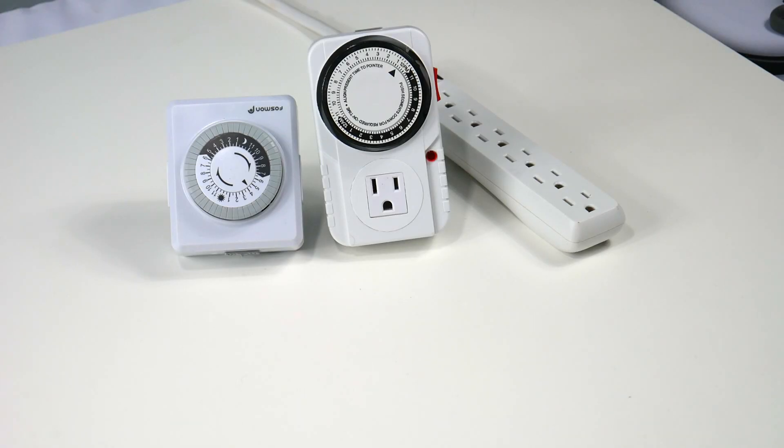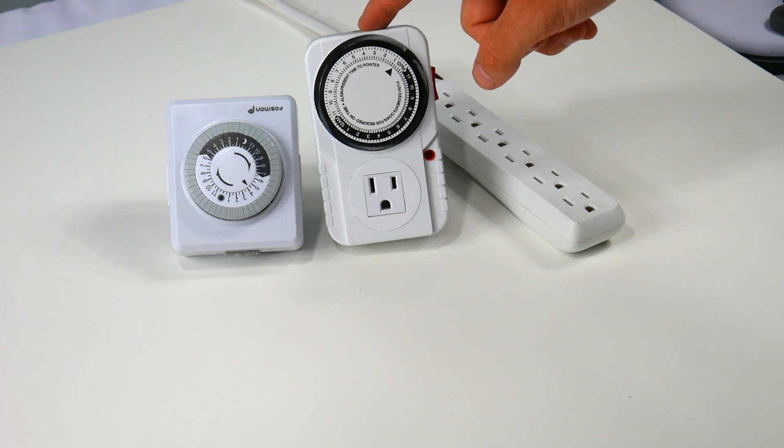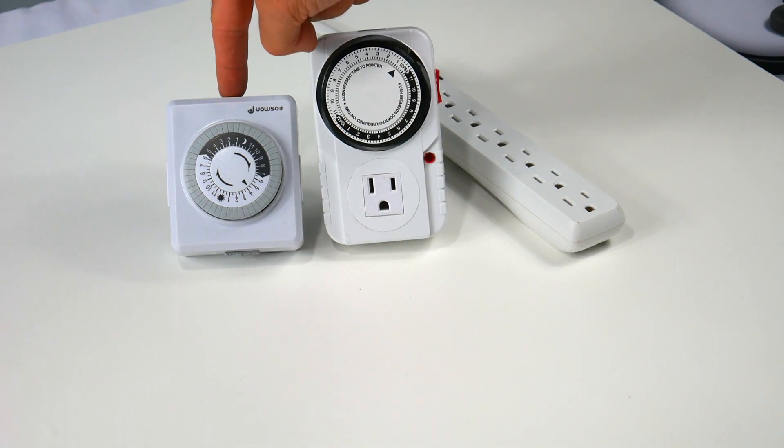You want to get out your outlet and your two timers. Now these timers are very important. This timer is going to control your pump and this timer is going to control your lights. And let me show you how to set these up.